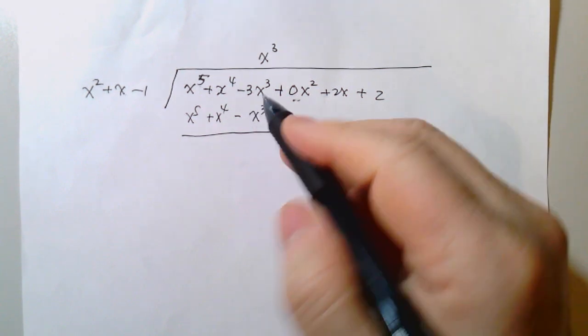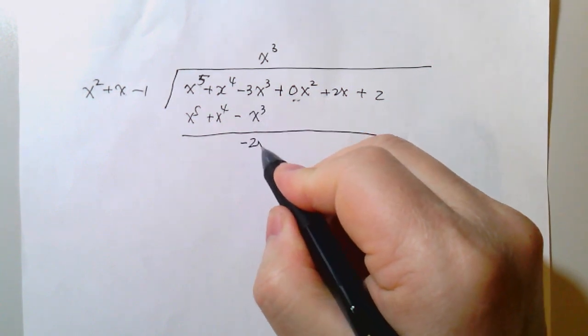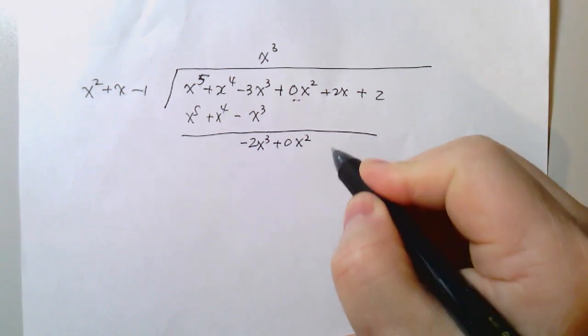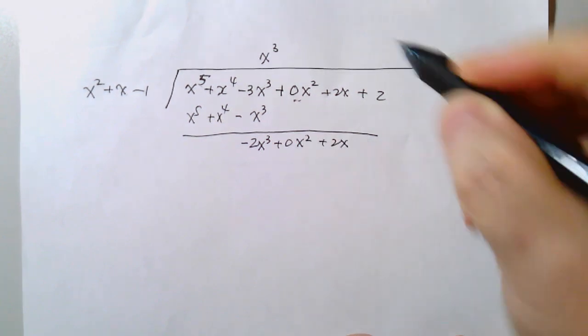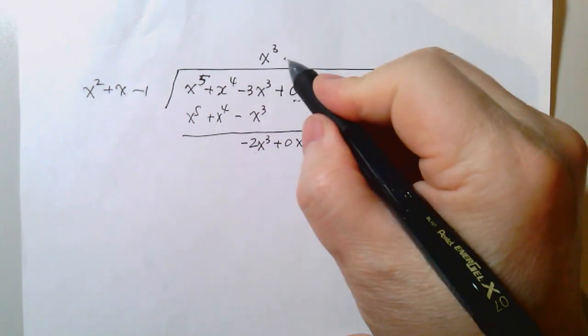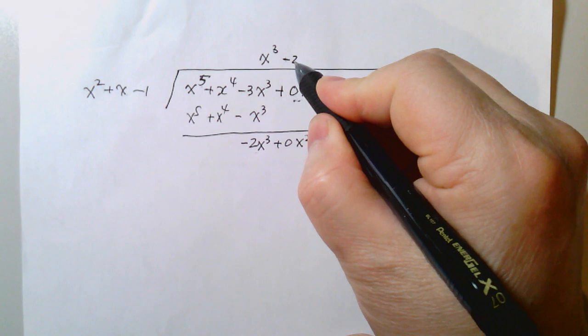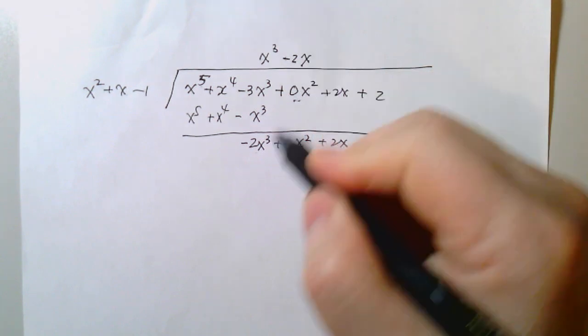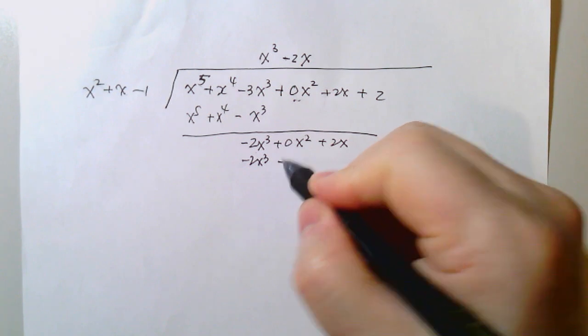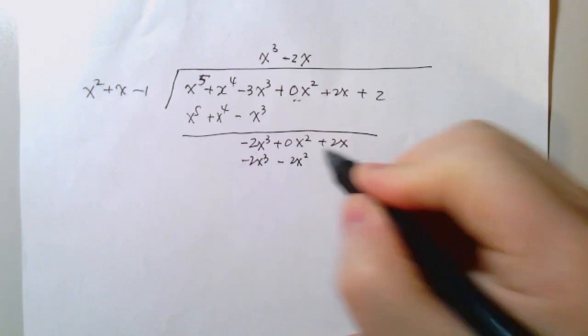Subtraction, you got negative 2x cubed, plus 0x squared, plus 2x. Negative 2x cubed, this is x squared, so you use negative 2x to get negative 2x cubed, then minus 2x squared, plus 2x.